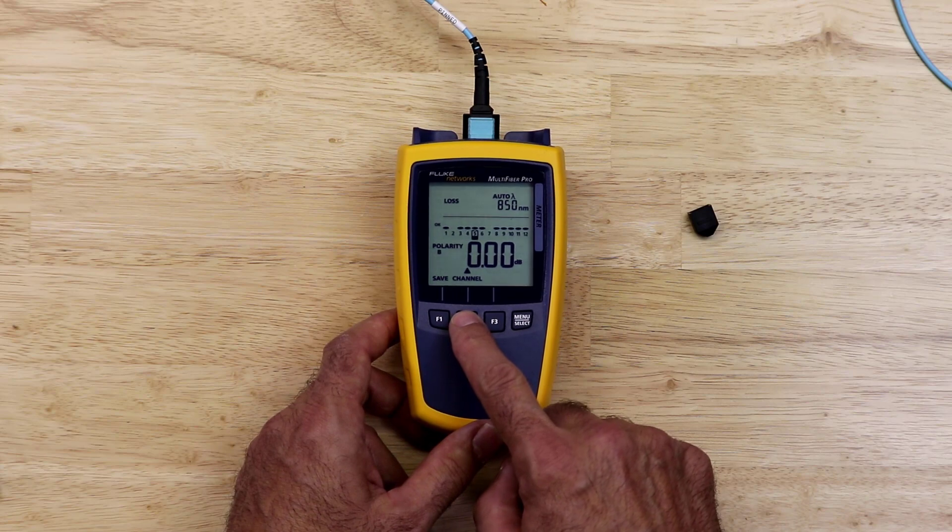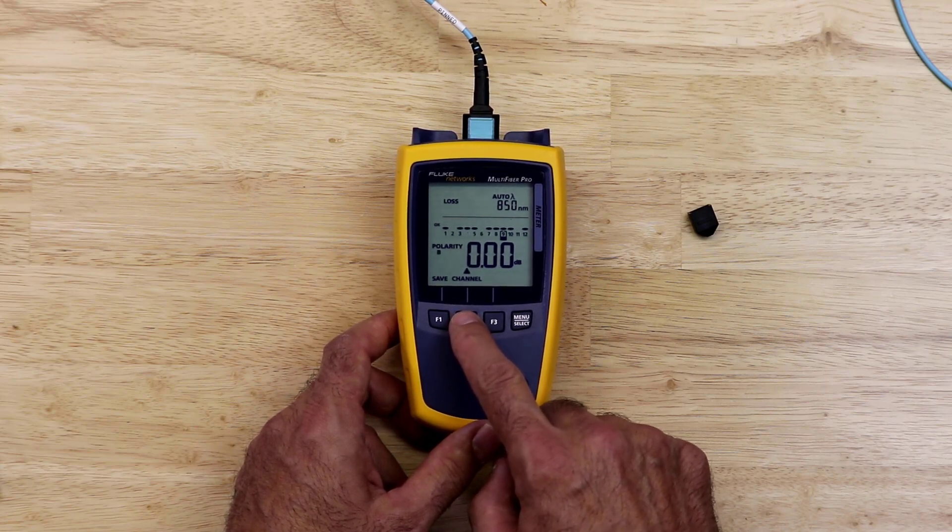If, after going through all of the channels, you see any loss, it's important to go back and reset reference. Values other than zero here could indicate that the light source did not have time to stabilize before setting reference. As long as we see values less than a few hundredths of a dB, we're good to start testing.